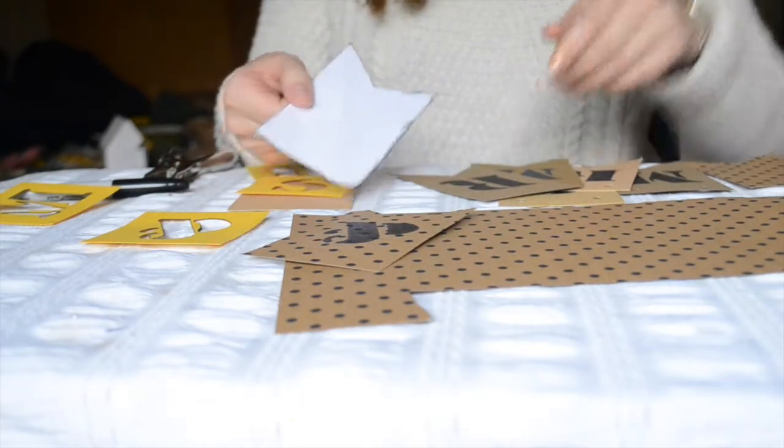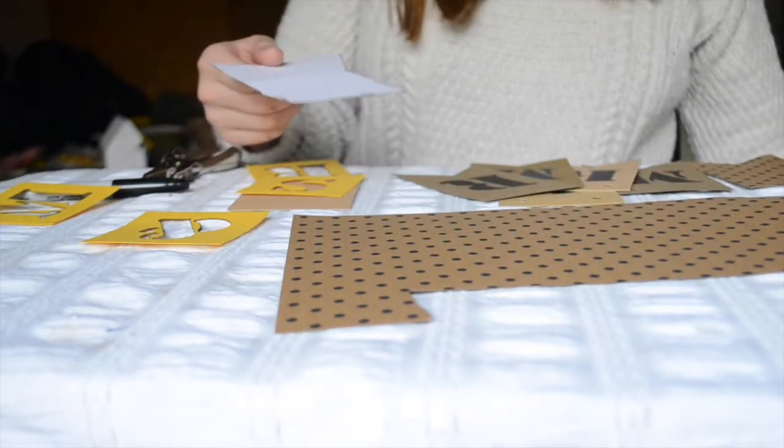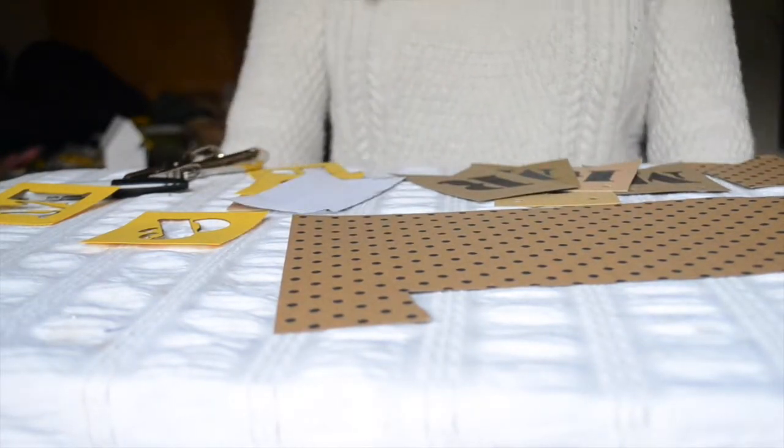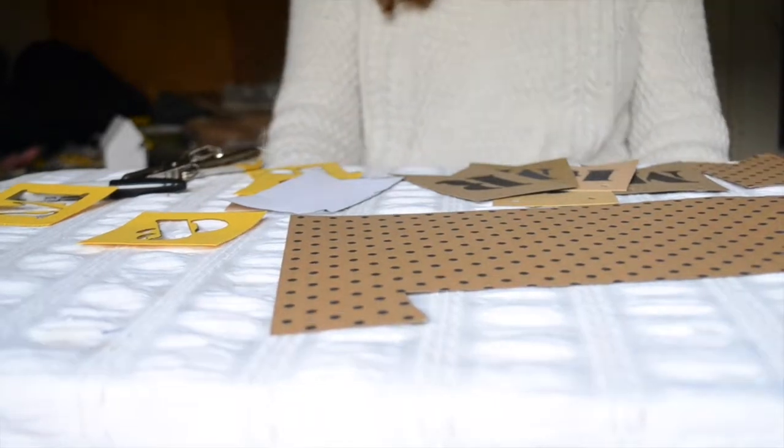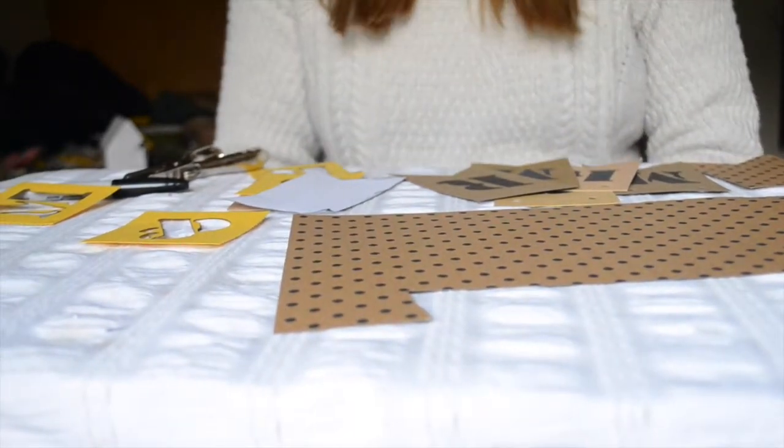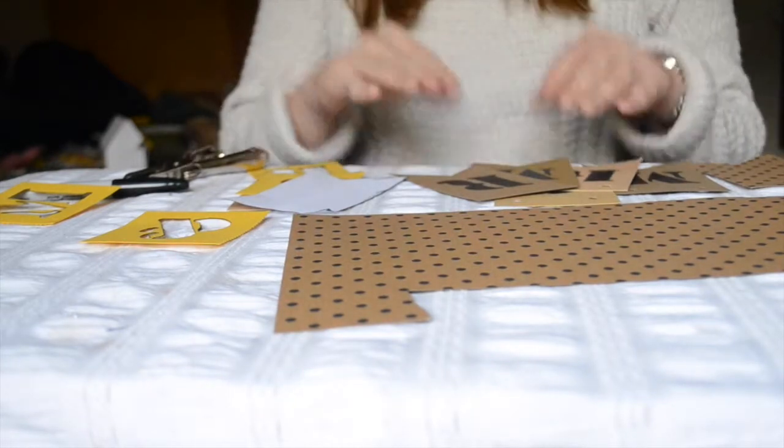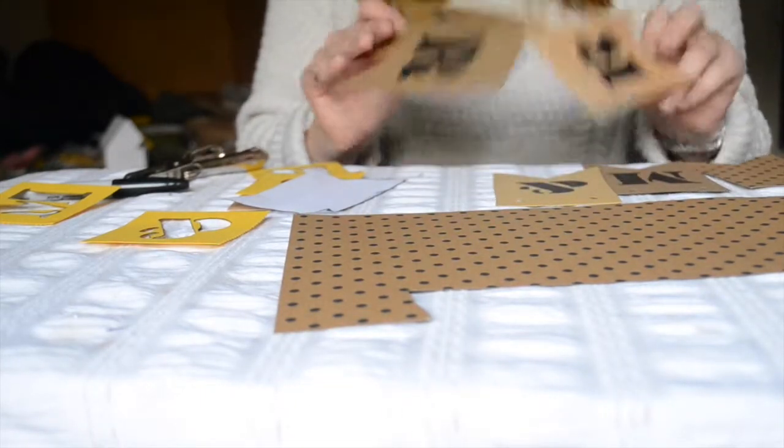So once you have that you're going to go ahead and trace it onto paper of your choice. So what I did is I'm making a banner for an engagement party and it says future Mr. and Mrs. on it. So that takes 12 different shapes to write the letters on.